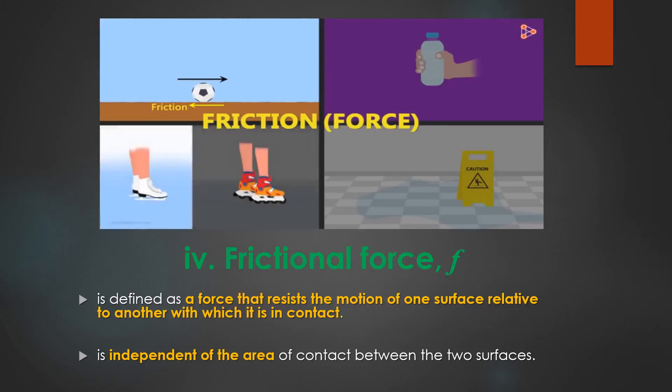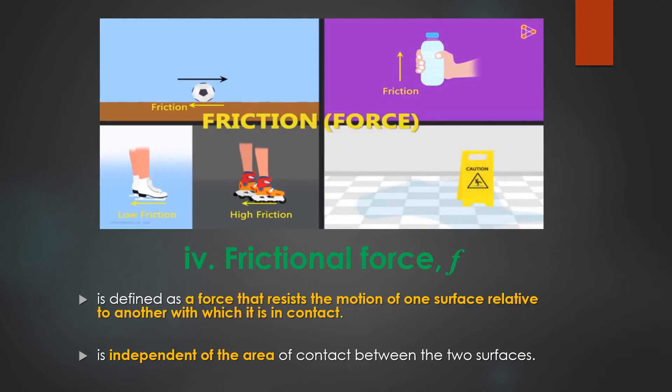The force of friction offered by the ice rink floor is lesser than the force of friction offered by the road. Hence skating on the ice rink is easier and seems effortless. The bottle does not slip down because the surface of your hand offers a friction in the upward direction. And in the case of the floor in the mall, the soapy water reduces the friction offered by the floor.